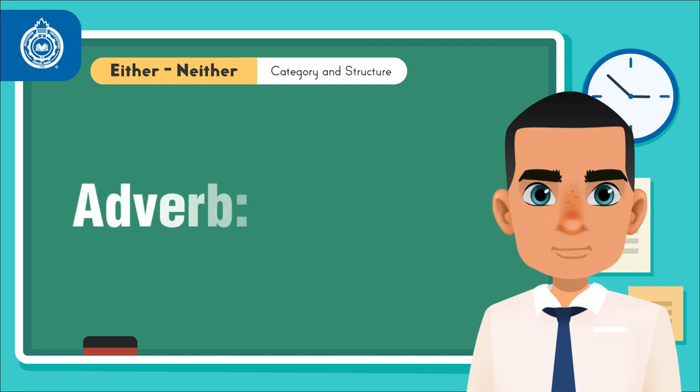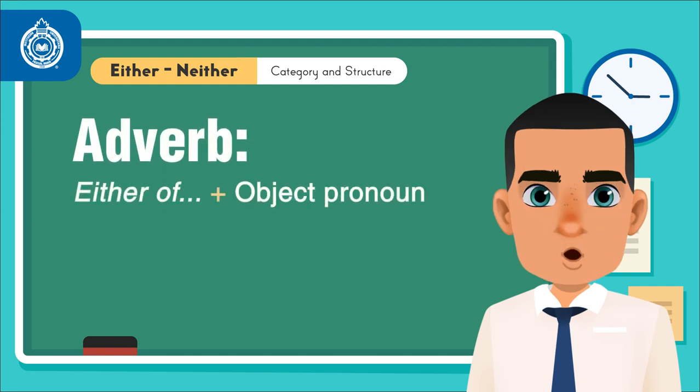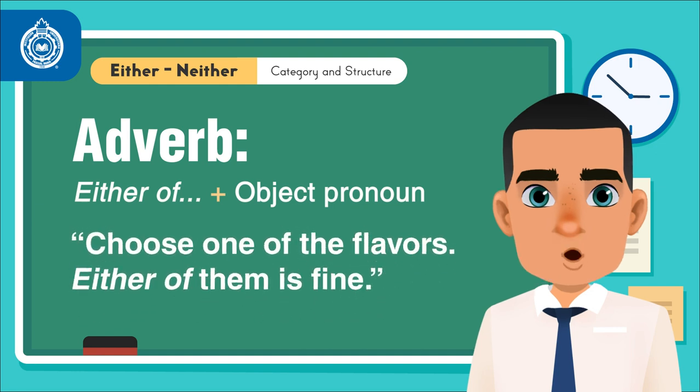Example. Either of plus the object pronoun. Example: Choose one of the flavors. Either of them is fine.